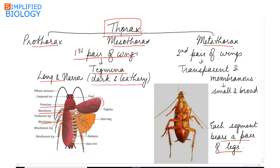The second pair of wings called the hind wings lie in the metathorax. These are the hind wings which lie in the metathorax. They are transparent, membranous, small and broad, and they are used in flight.